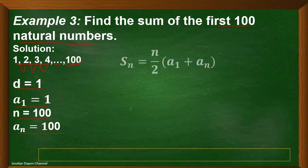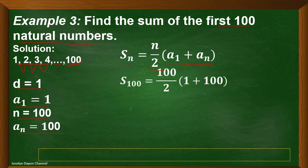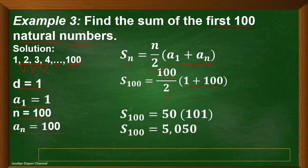For our solution, we write the formula S sub n equals n over 2 times the quantity of A sub 1 plus A sub n. I will use this formula to emphasize that we can use it when A sub n, the last term, is known. So S sub 100 equals 100 divided by 2 times the quantity of 1 plus 100. Simplify: 100 divided by 2 equals 50, and 1 plus 100 equals 101. Multiply: 50 times 101 equals 5050. This is the sum of the first 100 natural numbers.